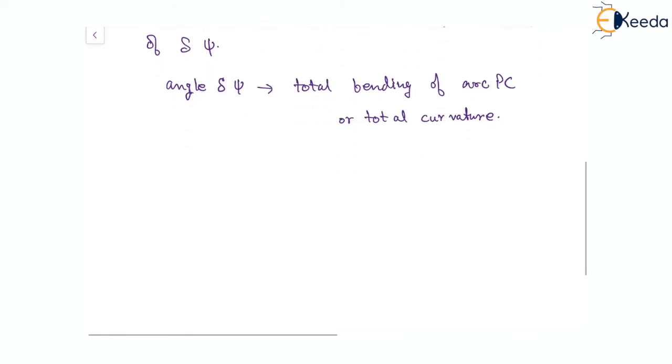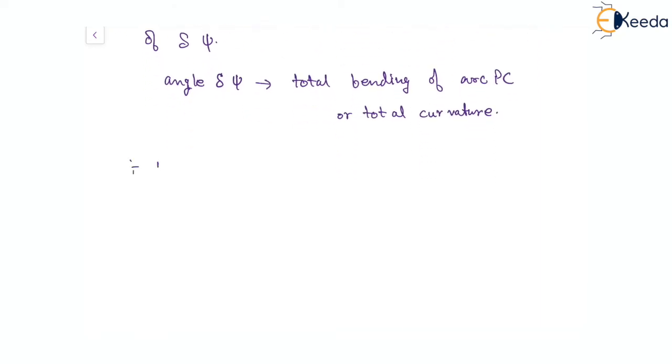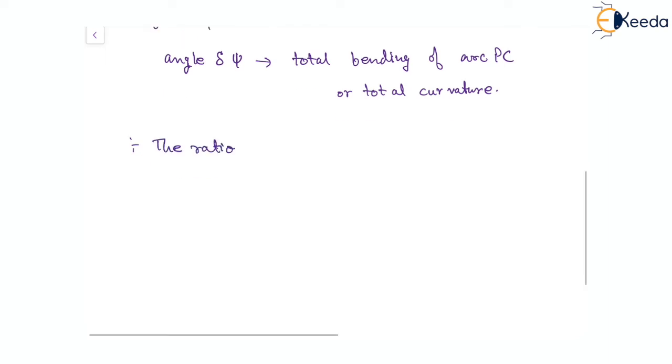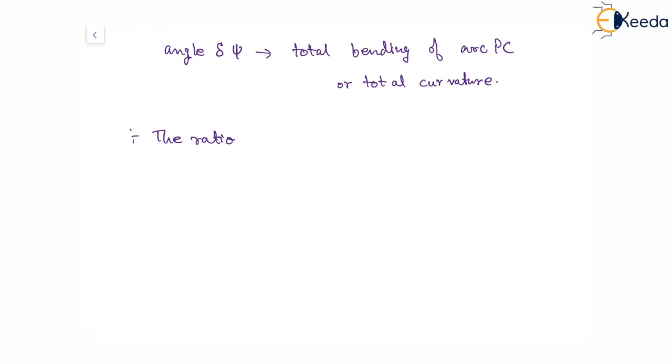Apart from this, the ratio of the change in angle to the length, that is del psi by del s, is the mean curvature, which is also known as average curvature of the arc PQ.